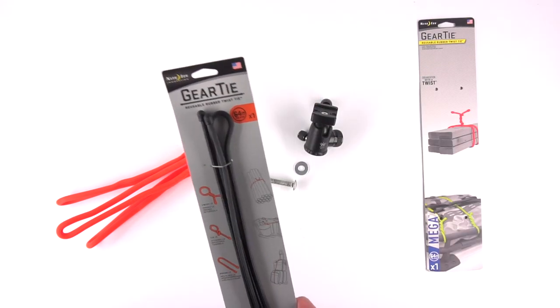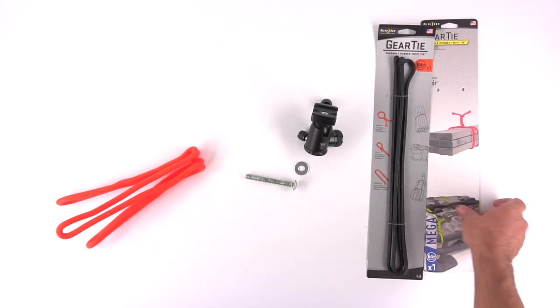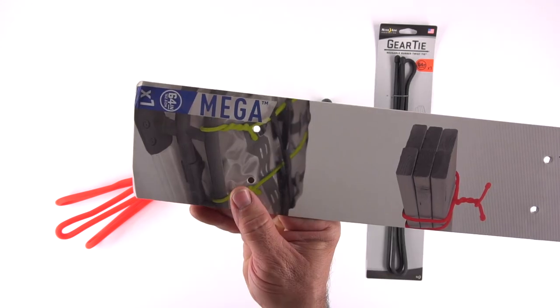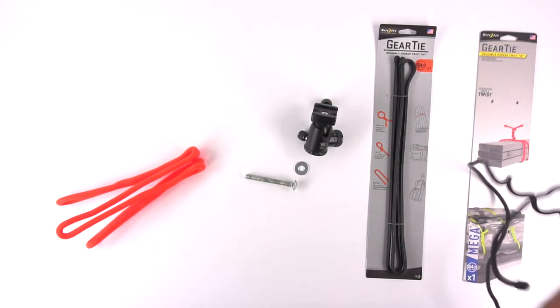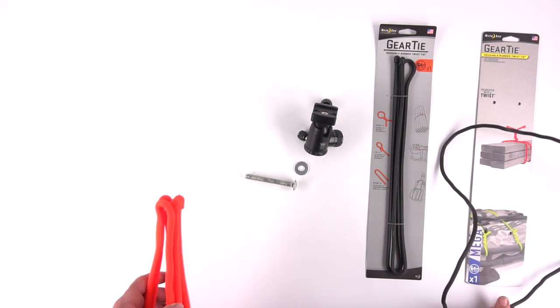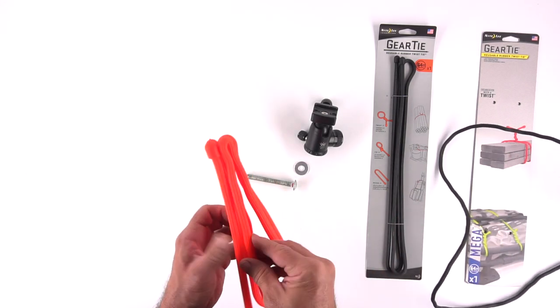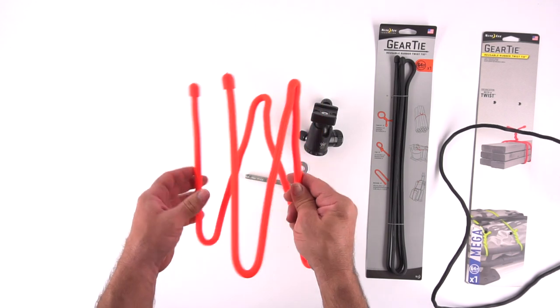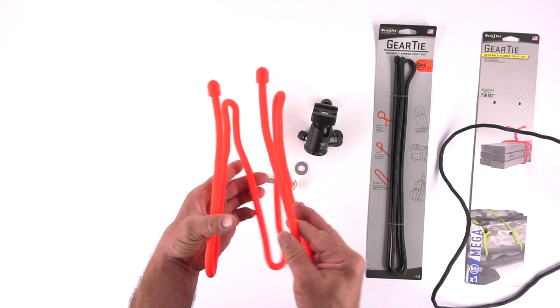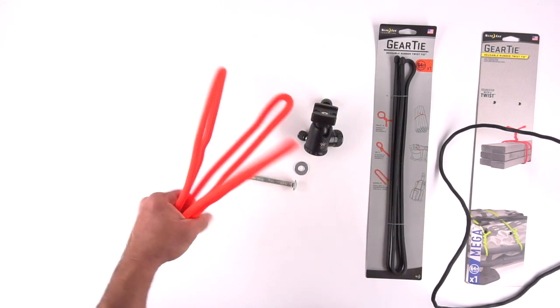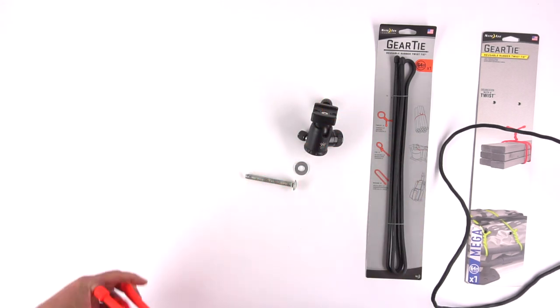Today we're going to use two 64 inch gear ties, one normal thickness one, and one of the thicker mega sized. So each one of these legs, you're going to bend it back and forth six times, and they'll be about 10 and a half inches or 27 centimeters. You might have to fiddle with it a little bit to get them all equal. And that'll give you the three legs for the tripod.